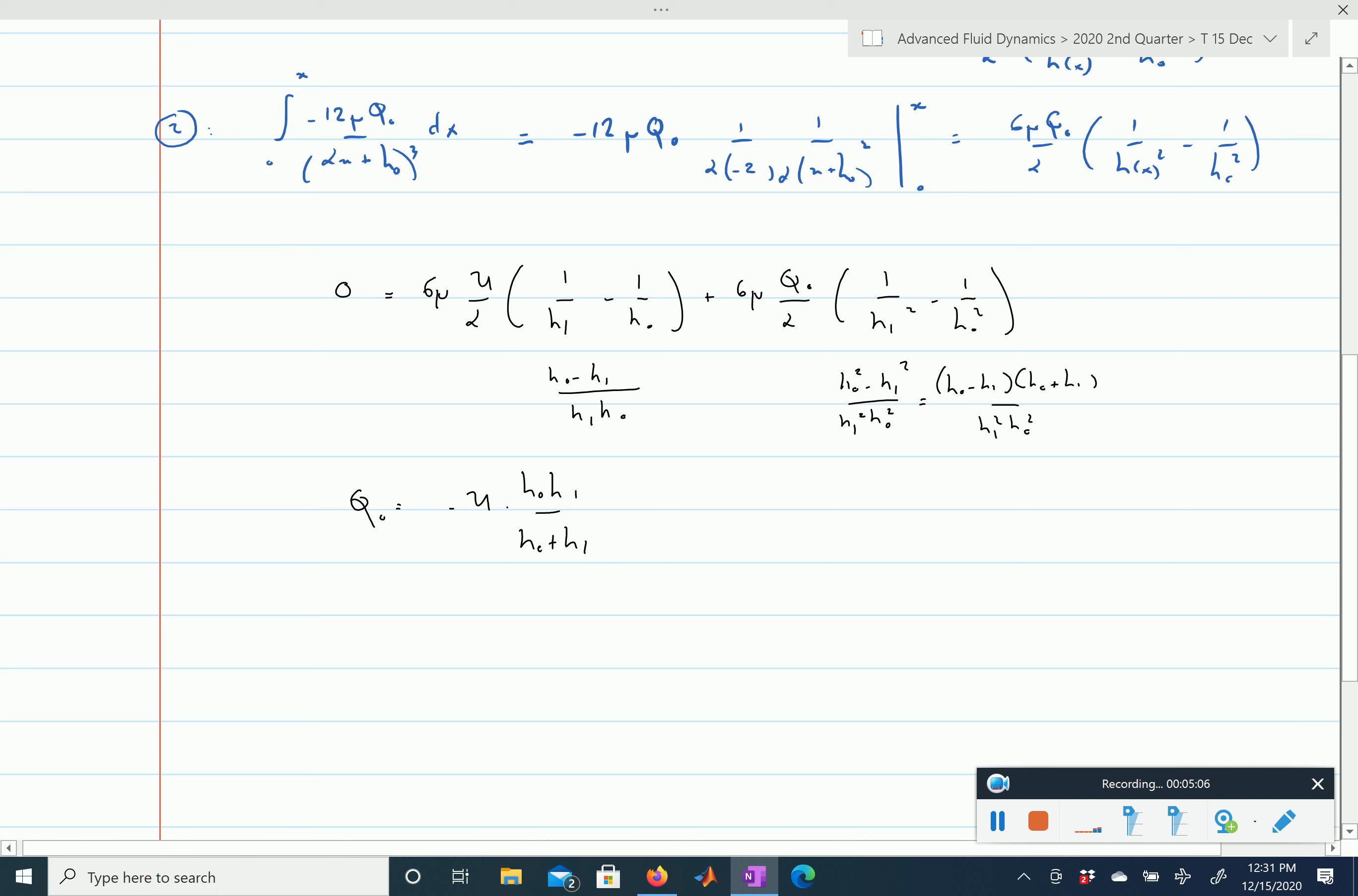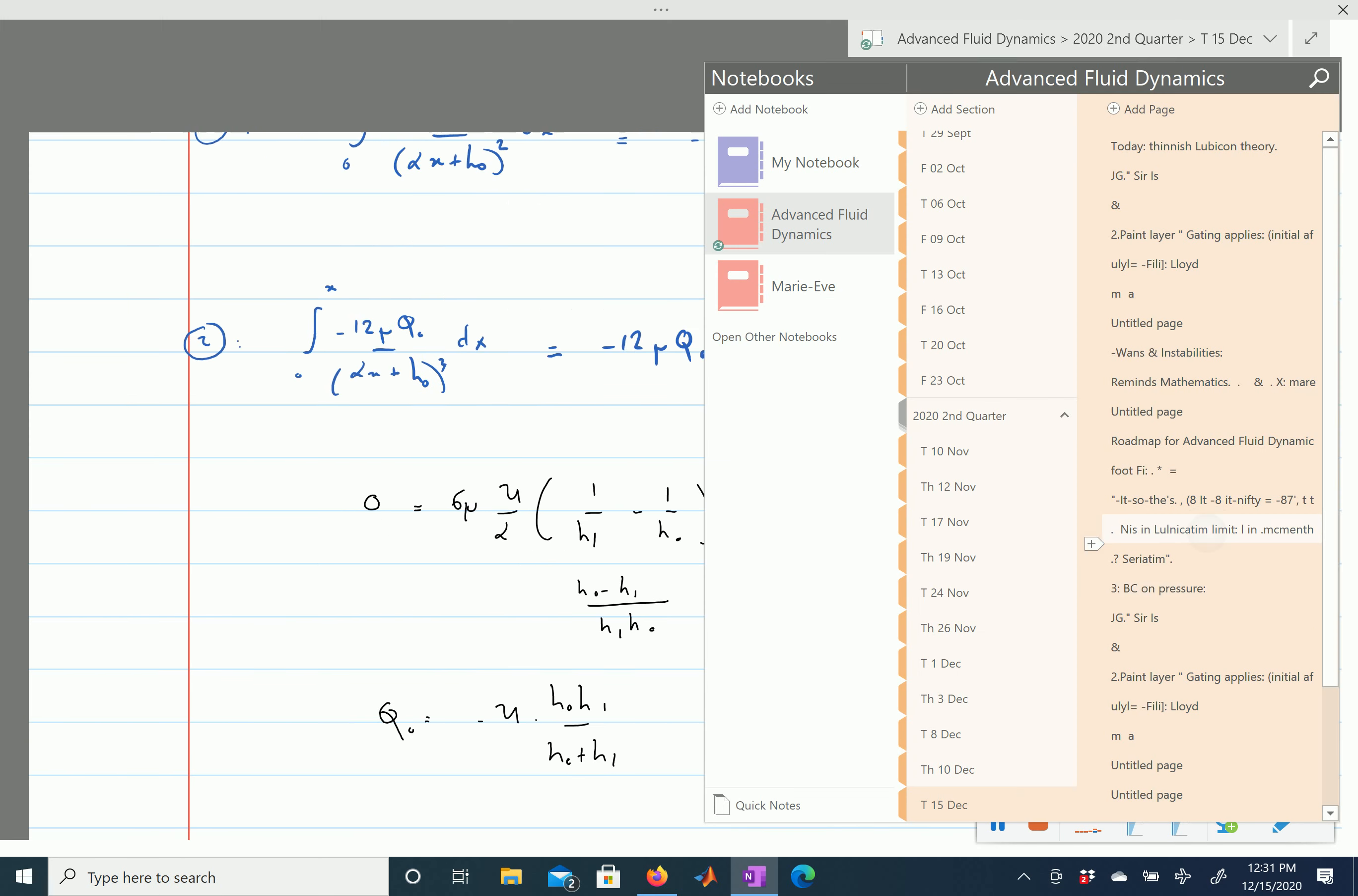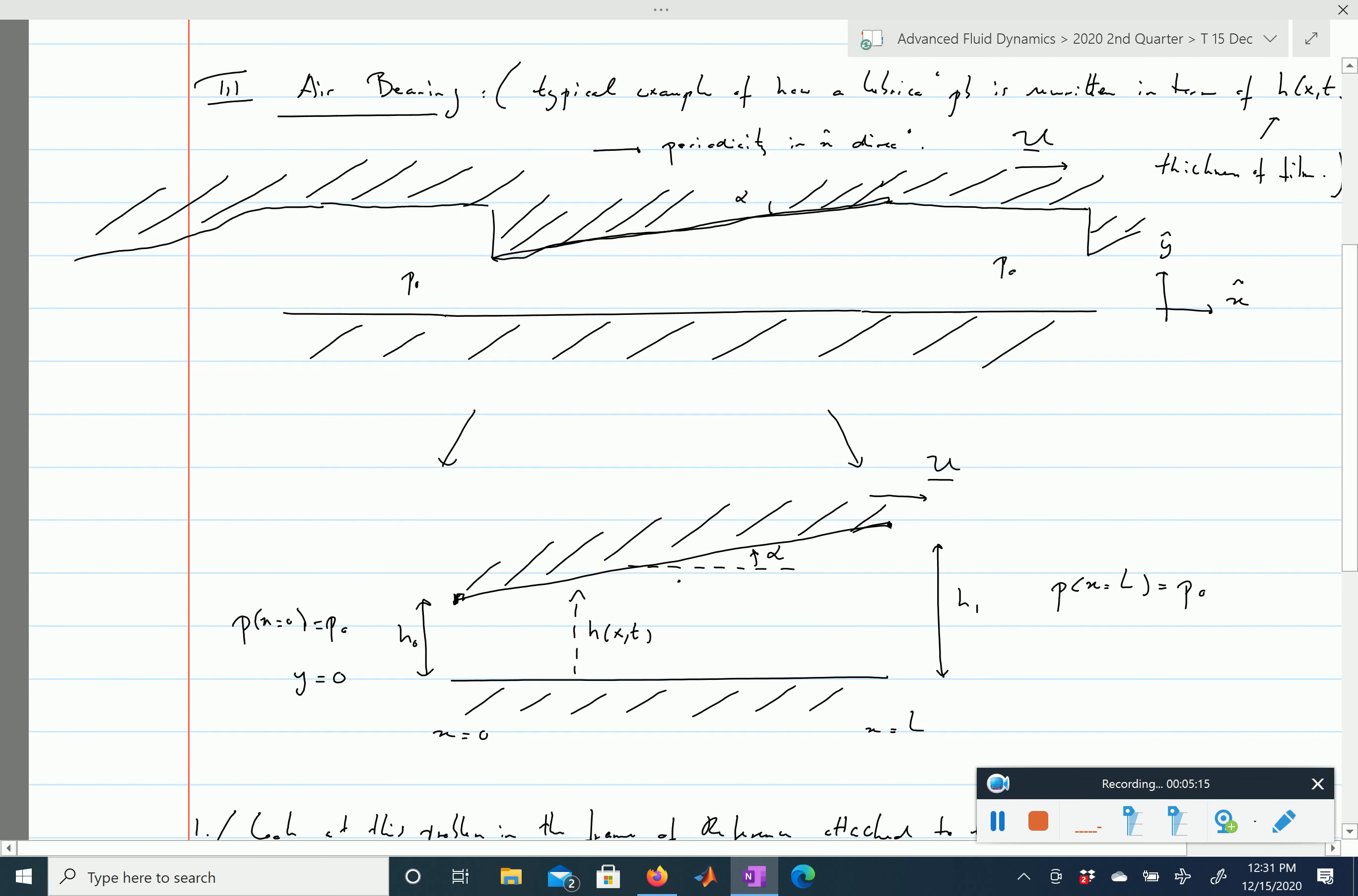At this point I want you to notice that, as expected, q in our frame of reference is going to be negative. So if you're thinking again about our initial picture here, in the frame of reference where we are moving with the top plate, this plate is being dragged to the left, so if you're thinking about the volumetric flow rate, you expect this plate to sort of drag the flow along in the negative direction, so we get a negative q0.